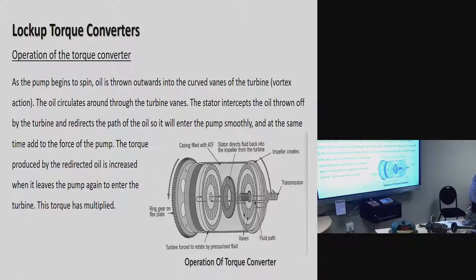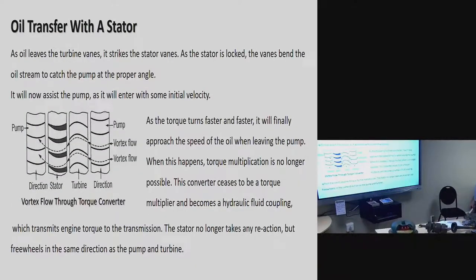Torque converter operation. As the pump begins to spin, oil is thrown outwards via the curved vanes of the turbine — vortex action — meaning the oil spins in circles. The oil circulates through the turbine vanes, and the stator intercepts the oil thrown off the turbine and redirects it so it enters the pump more smoothly. The torque produced by the redirected oil is increased as it leaves the pump to enter the turbine — the torque is multiplied.